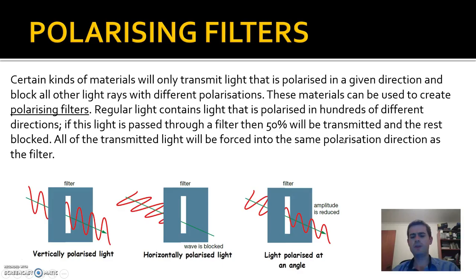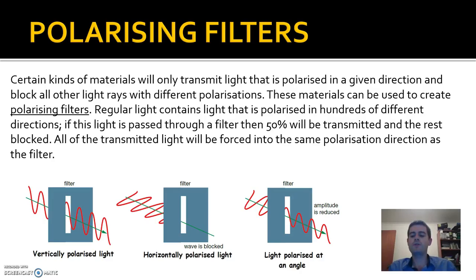Certain kinds of materials will only let light pass through them if it's polarized in a particular direction, and any light polarized in the wrong direction will be blocked. You can use these materials to create polarizing filters. A common material used is PVA plastic that's been heated and stretched so that all the molecules form long straight lines. When light hits those lines, it can only pass through if polarized in the same direction as those molecules. If the molecules are vertical, the light must be vertically polarized to get through — otherwise it'll be blocked.